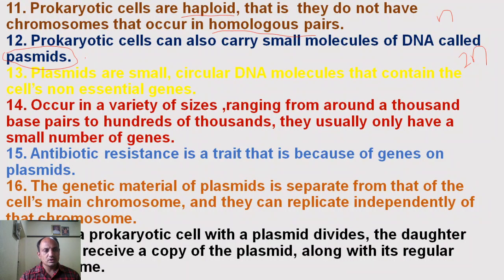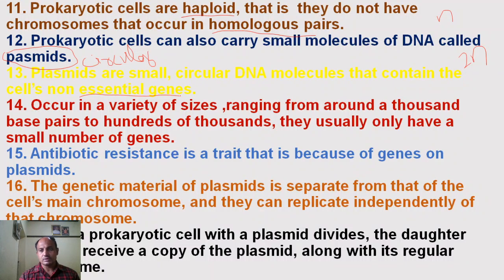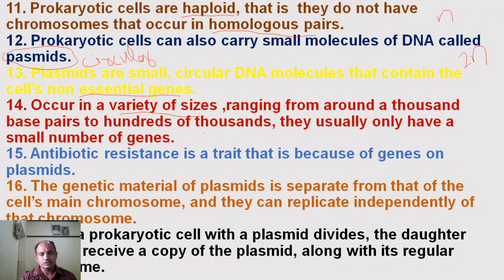Plasmids are circular and self-replicating. These circular DNA molecules consist of the cell's non-essential genes — necessary genes are present in the chromosome DNA, but plasmids consist of non-essential genes. These plasmids occur in a variety of sizes, ranging from thousands of base pairs to hundreds of thousands of base pairs, and they usually have only a small number of genes.